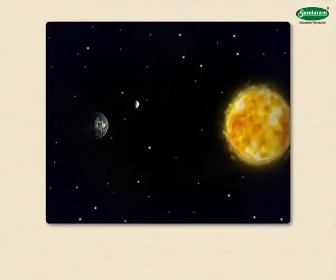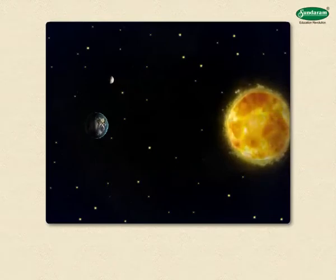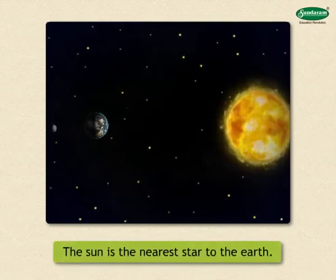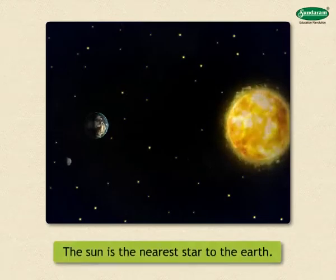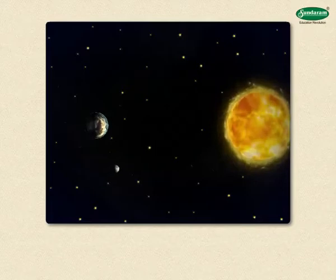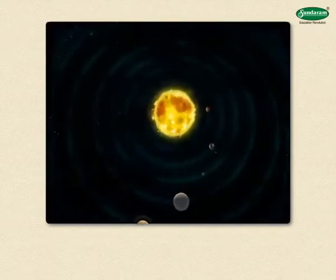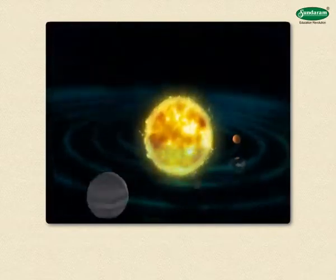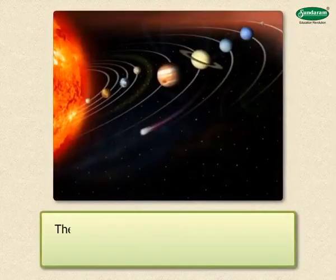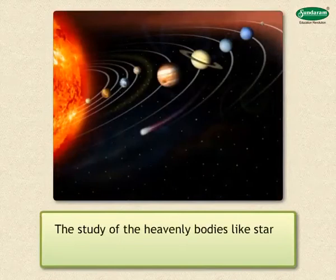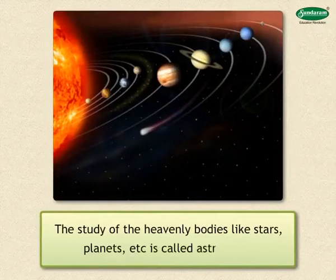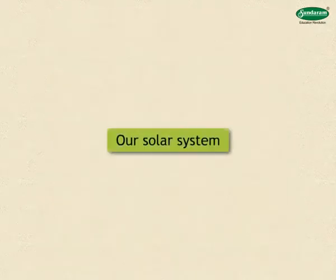The millions of stars that we see in the sky are very far away from us. In comparison, the moon and the sun are nearer. Therefore, we see that they are spherical in shape. Other stars and planets are also generally spherical in shape. The study of the heavenly bodies like stars, planets, etc. is called astronomy. Let us study what is our solar system.